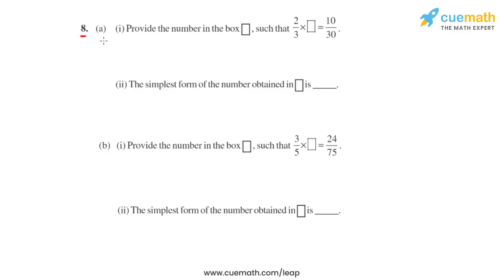Question number 8, part A asks us to provide the number in the box such that the product of 2 over 3 and the number comes out as 10 over 30. We take the fraction 2 over 3. To get the numerator as 10, we multiply 2 by 5, and to get the denominator as 30, we multiply 3 by 10. So the fraction we get is 5 over 10, and that is the number that goes in the box.